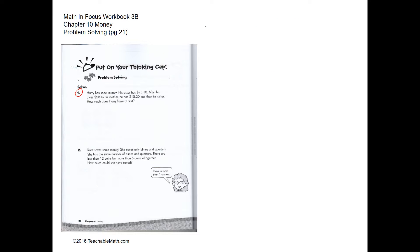Problem solving: This is not an easy question, it can be very tricky for some students. So first, we're going to put the sister down. The sister has $75.10. Next, we're going to put down how much Harry has. We don't know how much he has, but we know that after giving $28 to the mom, he has $15.20 less than his sister.